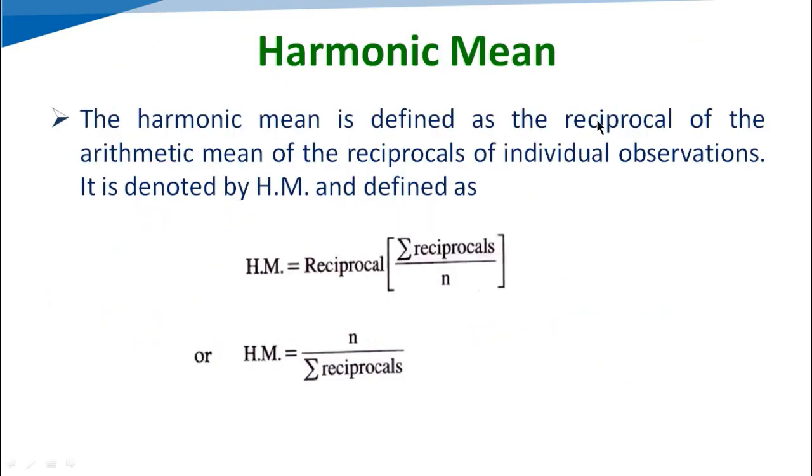Second one is the harmonic mean. The harmonic mean is defined as the reciprocal of the arithmetic mean of the reciprocals of individual observations. Harmonic mean equals the reciprocal of summation of reciprocals divided by n.